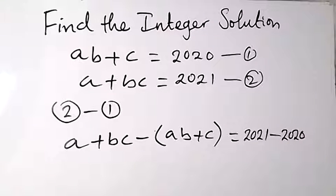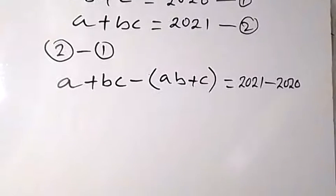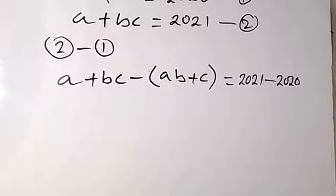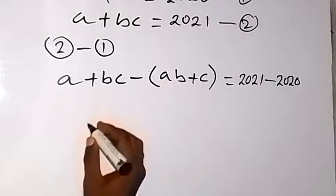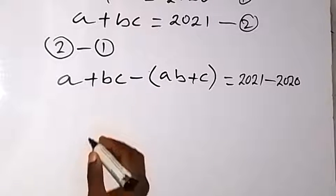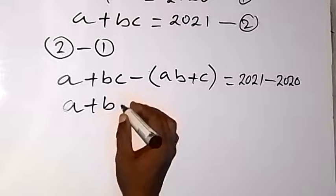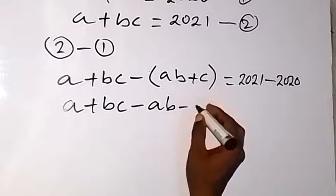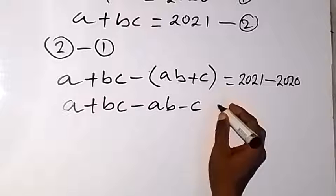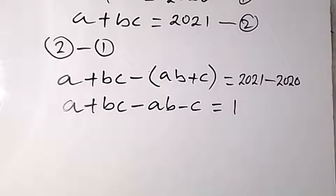From there now, we can open this bracket here with minus. And from there we have A plus BC. That will be minus AB minus C equals to 1. So we have 1 on the right hand side.